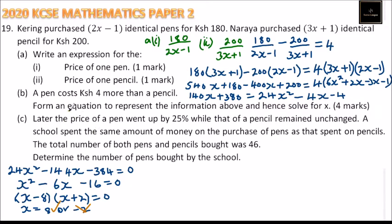Part C: Later, the price of a pen went up by 25% while that of a pencil remained unchanged. A school spent the same amount of money on purchasing pens as on pencils. The total number of pens and pencils bought was 46. Determine the number of pens bought by the school.